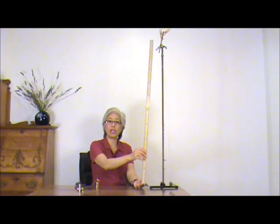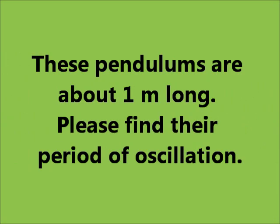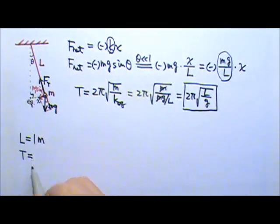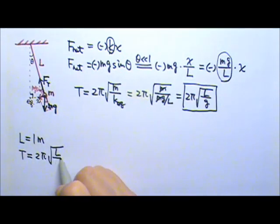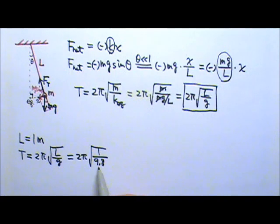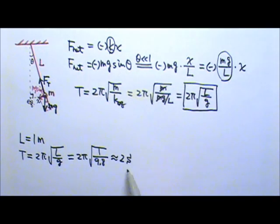Now they are oscillating with small amplitude — an angle of 10 degrees or less. These pendulums are about 1 meter long. Please find their period of oscillation. The length is 1 meter, and the period is 2π times the square root of L over g. Plugging in L = 1 meter and g = 9.8, it turns out that pi and the square root of 9.8 are almost equal, so they nearly cancel, giving a period of about 2 seconds.